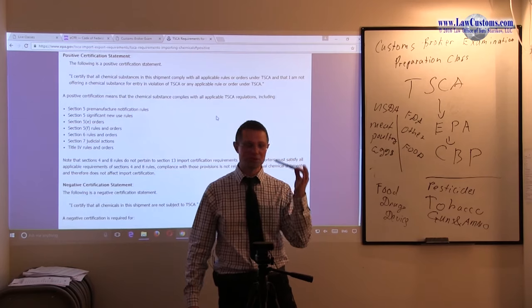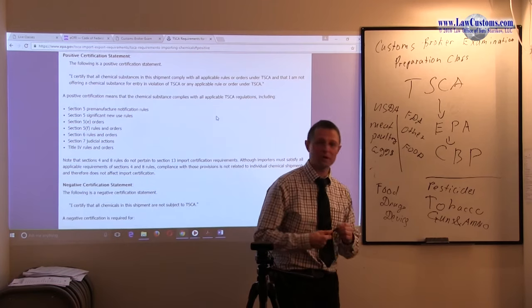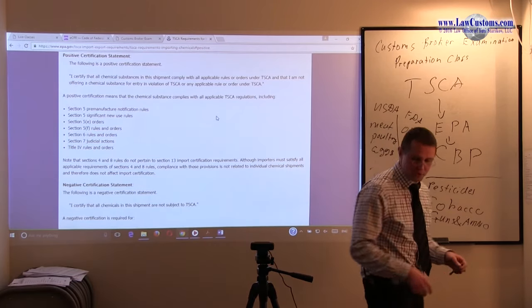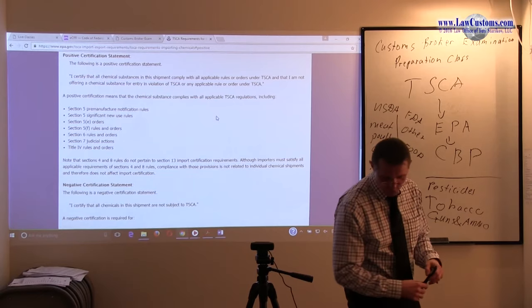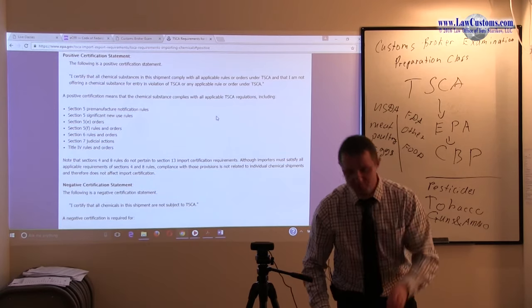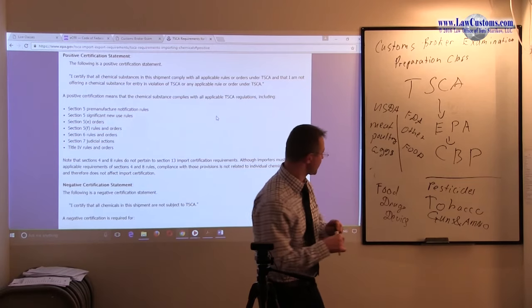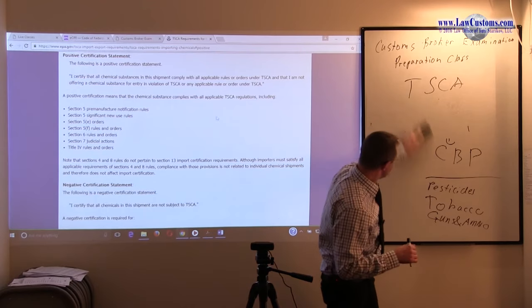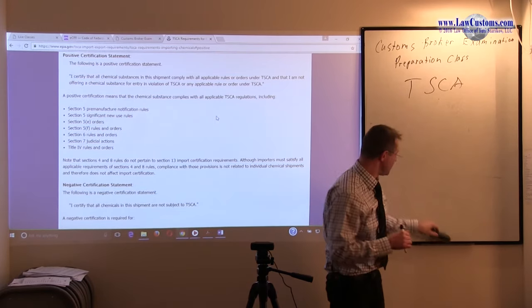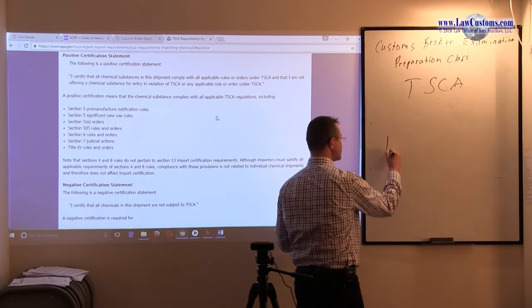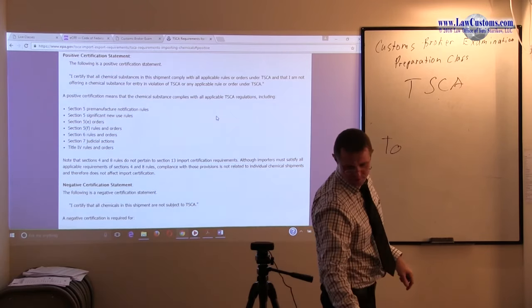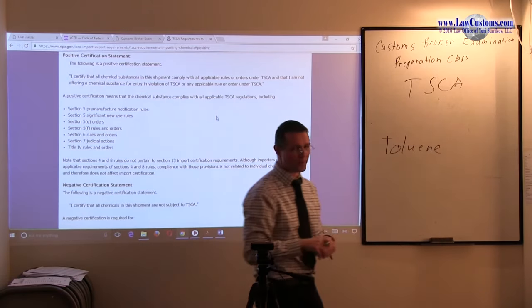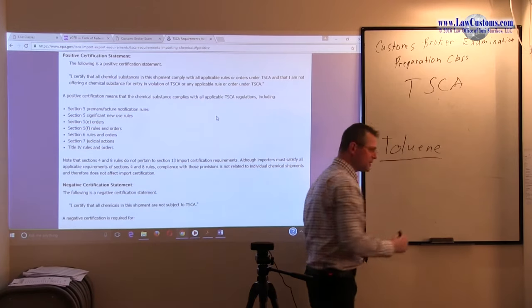Most likely it's going to be Section 6 rules because for a pen like this, this is not some kind of new invention. The ink has been around for a long time and the stuff in the ink is known. For example, one of the things which many manufacturers include in a pen is a chemical called toluene.